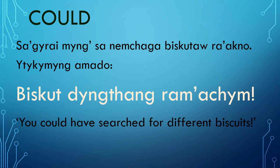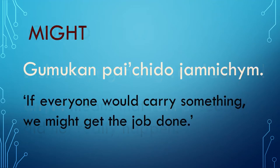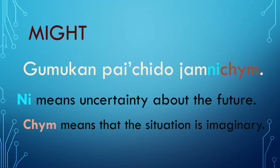You could have searched for different biscuits. Chm means that the action did not really happen — it could happen. Gu mukan paichi do, jang ni chm. If everyone would carry something, we might get the job done. Ni in this sentence means uncertainty about the future, and Chm means that the situation is imaginary. That is why in English we say: if everybody would carry something, we might get the job done.